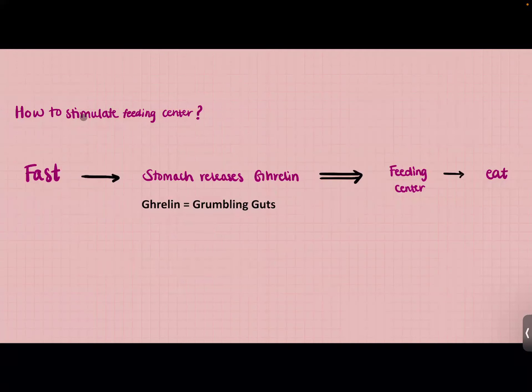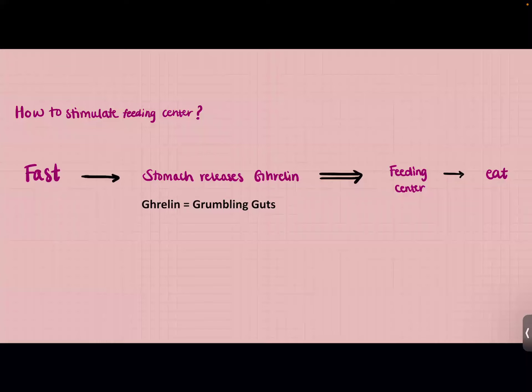How do we stimulate the feeding center — how do we tell our body we need to eat? When we fast, our stomach releases the hormone ghrelin, which stimulates the feeding center or the ventrolateral nucleus of the hypothalamus, and therefore we eat. You can remember ghrelin easily because it sounds like 'grumbling' — when you're hungry, your stomach makes a sound. So ghrelin equals grumbling, and you get hungry and eat.